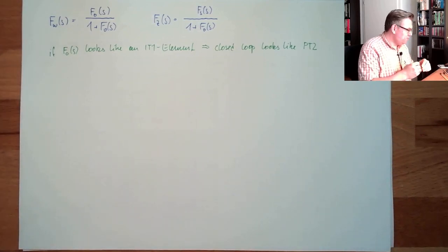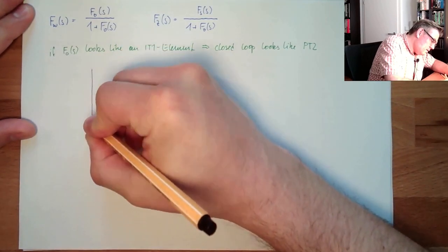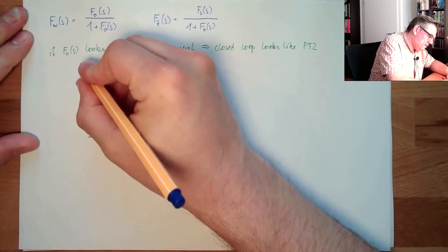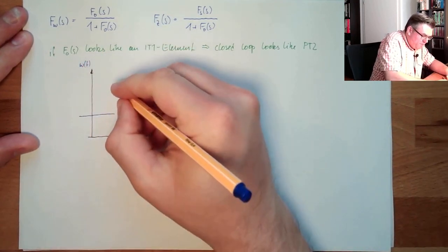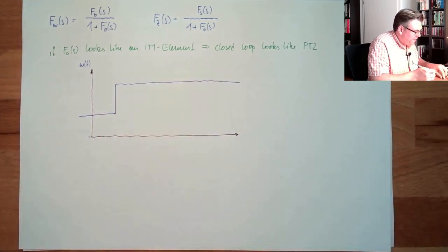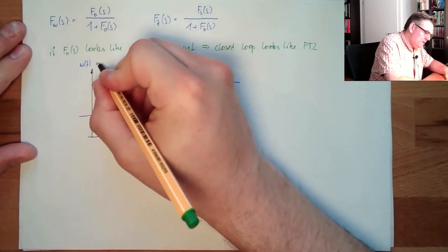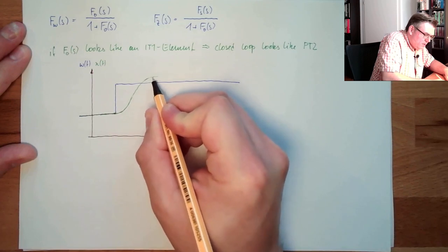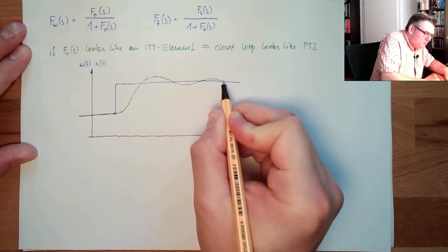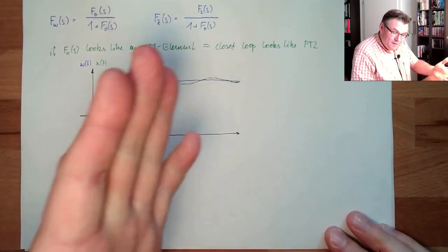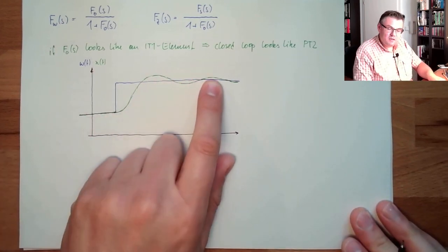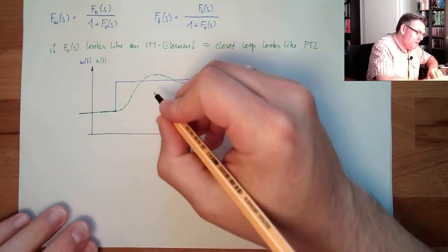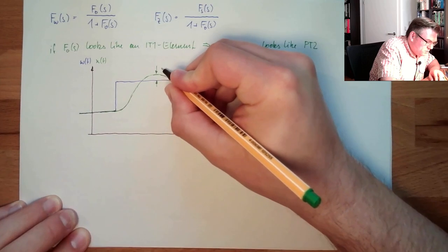Remember how a PT2 element looks in time domain. If we have a reference variable and make a step change, then our controlled variable x reacts. If it looks like a PT2 element, it may show a small overshoot and then settle. If the closed-loop behaves like PT2, then usually the open-loop transfer function is an IT1 element.